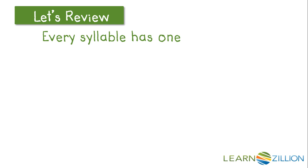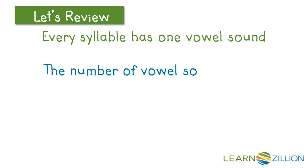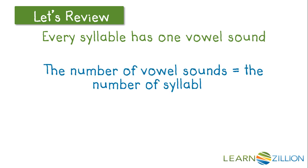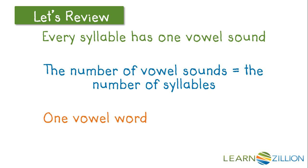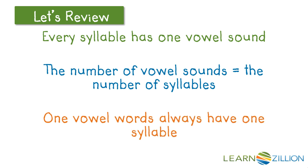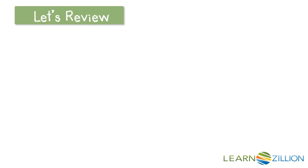Every syllable has one vowel sound, and the number of vowel sounds equals the number of syllables found in a word. So, one-vowel words always have one syllable.